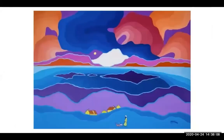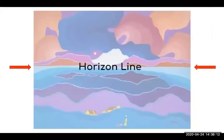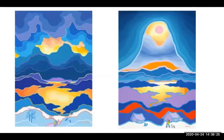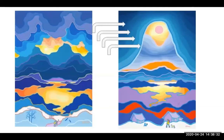Every one of Harrison's landscapes also has a horizon line, or the line that separates land and sky, or in this case sea and sky. I also noticed that his paintings almost always have a sun, and many lines or stripes in the sky that most likely represent those beautiful sunsets that we saw, or the aurora borealis.